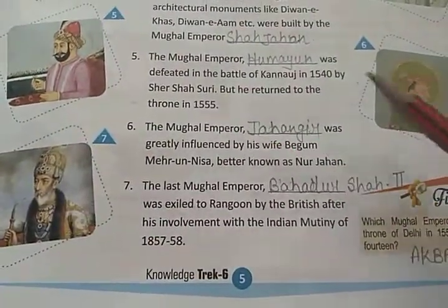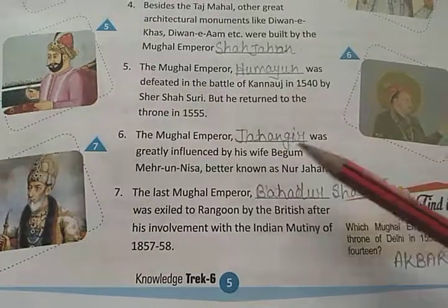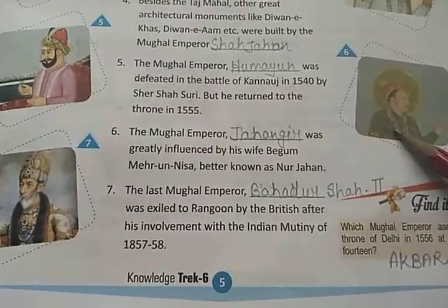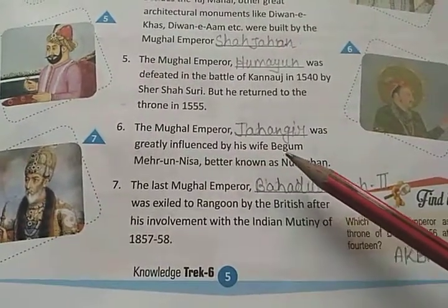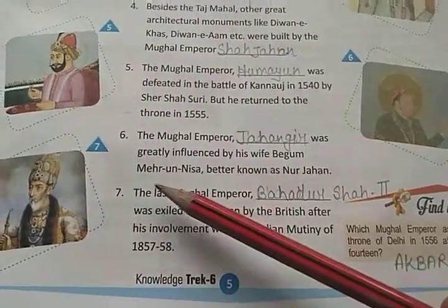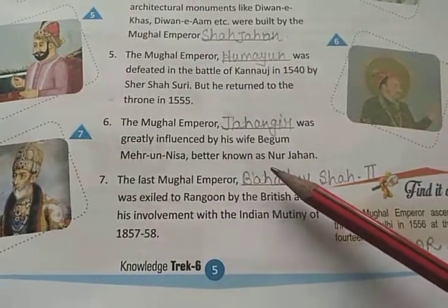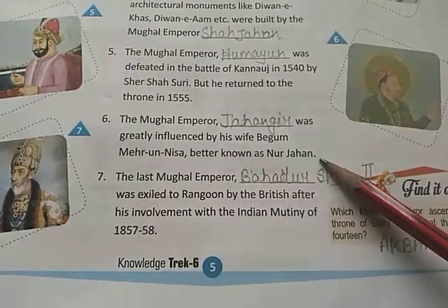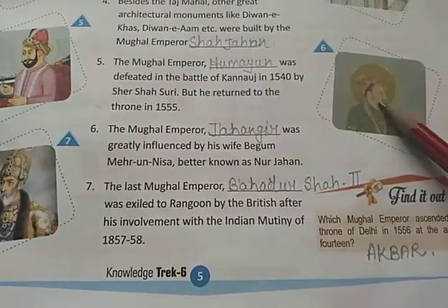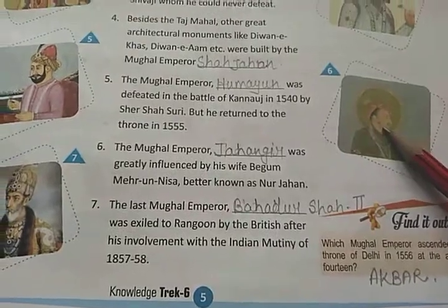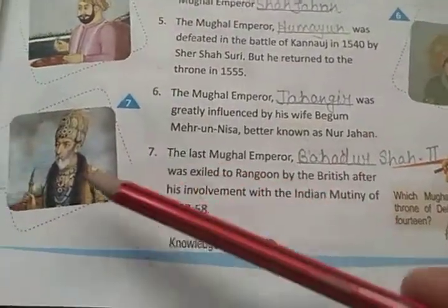Number 6: Mughal Emperor Jahangir was greatly influenced by his wife Begum Mehrunnisa, better known as Noor Jahan. Jahangir ki wife ka naam tha Noor Jahan ya Mehrunnisa.